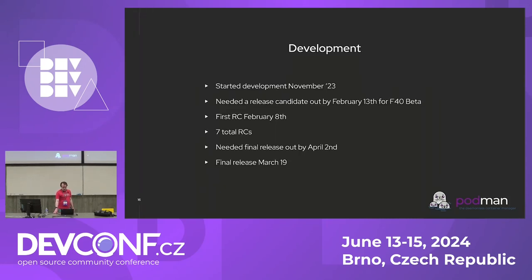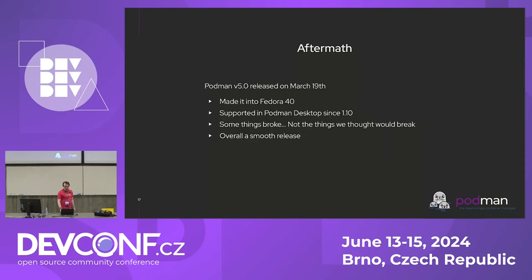Development started in November 2023. We needed a release candidate out by February 13th for the Fedora 40 beta — we managed it on February 18th. There were seven total release candidates, which tells you there were a lot of changes, with development ongoing basically until the last RC. The final release came out March 19th — a healthy margin before Fedora 40. For the most part everything was relatively smooth, and it's been supported in Podman Desktop since version 1.10.